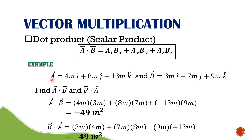For example, given vector a = 4î + 8ĵ − 13k̂ and vector b = 3î + 7ĵ + 9k̂, a · b equals (4×3) + (8×7) + (−13×9) = 12 + 56 − 117 = −49 m². For b · a: (3×4) + (7×8) + (9×−13) also equals −49 m², proving the dot product is commutative.